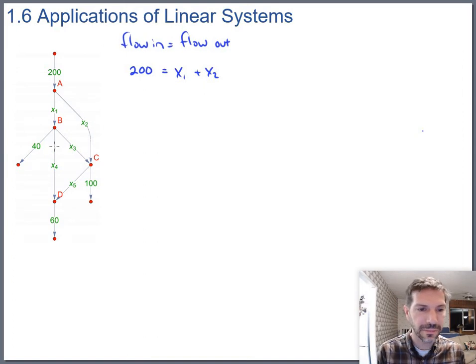At node B, the flow in is x1. And the flow out is x2 plus x3.